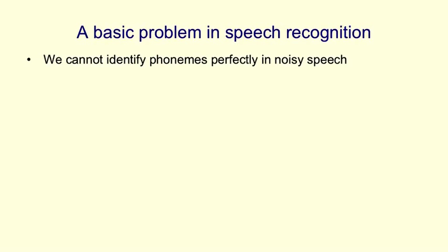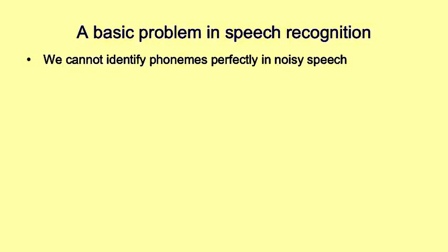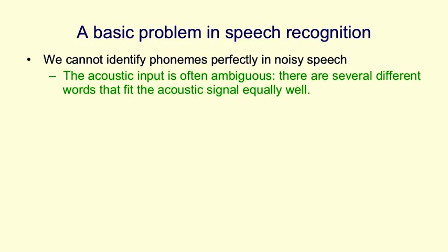We're now going to see an important practical use for feature vectors that describe words. When we're trying to do speech recognition, it's impossible to identify phonemes perfectly in noisy speech. The acoustic input just isn't good enough. It's often ambiguous. There may be several different words that fit the acoustic signal equally well.